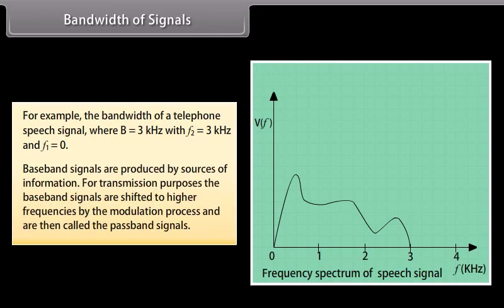Baseband signals are produced by sources of information. For transmission purposes, the baseband signals are shifted to higher frequencies by the modulation process, and are then called the passband signals.